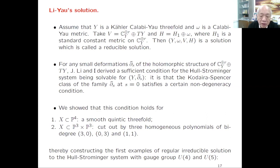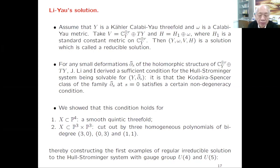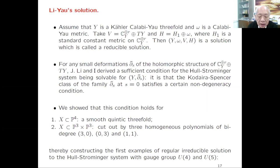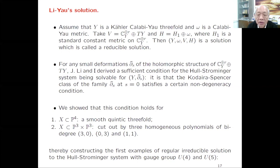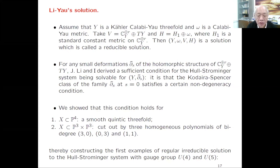This non-degeneracy condition is quite interesting because it involves both the Kodaira moduli space and the complex moduli space together. Under this condition, we proved that the Strominger system is solvable, and we verified the condition holds for interesting manifolds. For example: the smooth quintic in CP^4, defined by a fifth-order equation; and the Schoen manifold, obtained by taking a cubic cross a cubic and the (1,1) class. We proved all these Calabi-Yau manifolds satisfy our non-degeneracy condition.